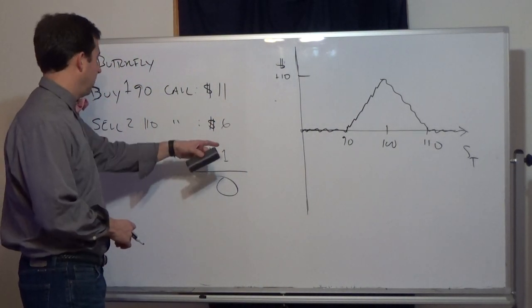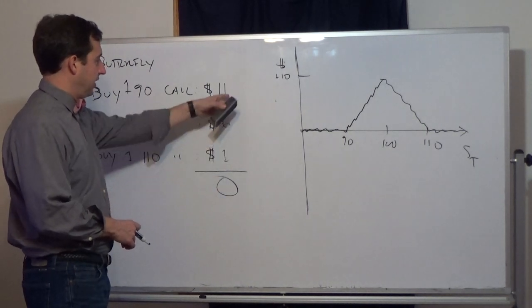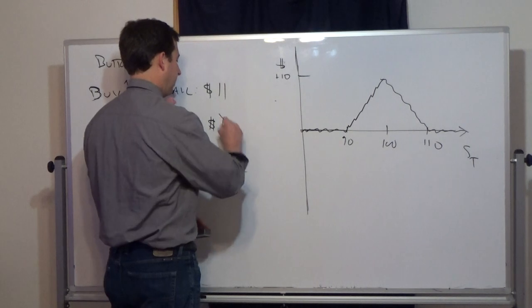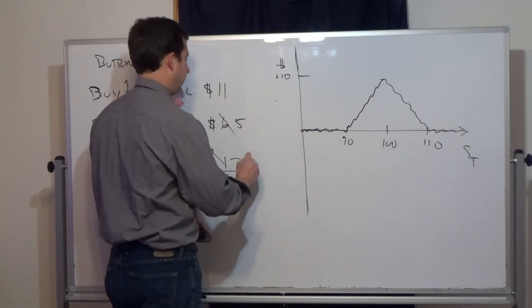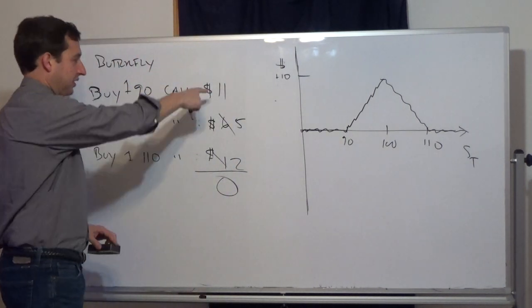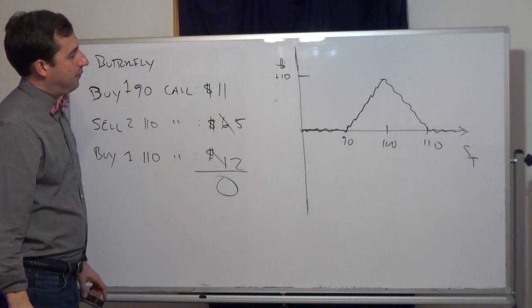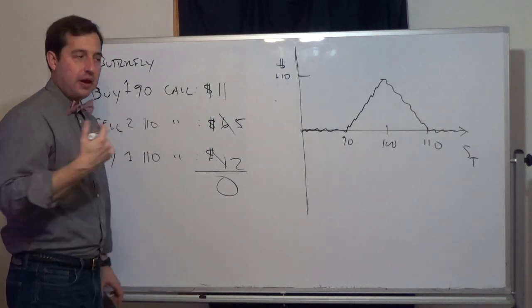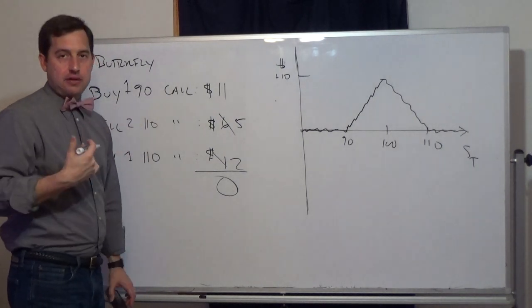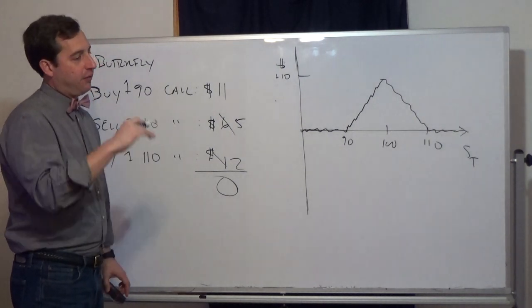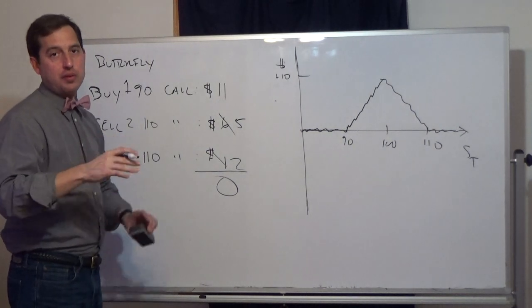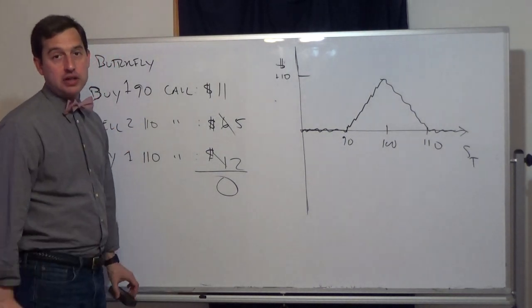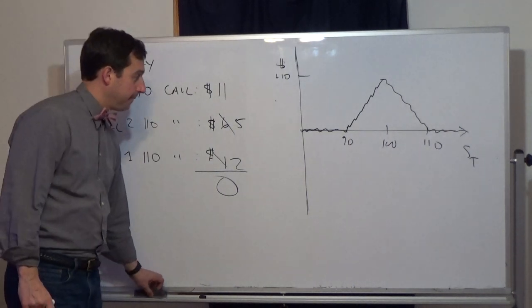Obviously if this arbitrage existed, traders would buy a lot of the cheap options and sell a lot of the expensive ones, pushing prices back toward fair value — from $6 and $1 back toward $5 and $2. This tells us that call prices at different strikes are tightly related. A call at one strike can't simply move around without calls at other strikes moving accordingly — that's what the butterfly is really useful in illustrating.